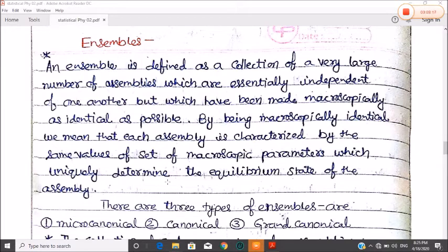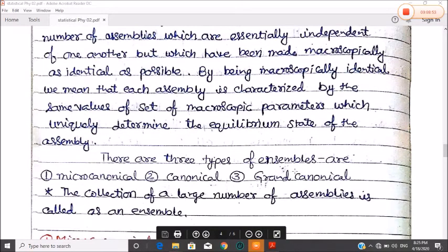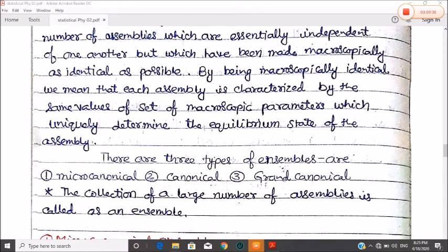An ensemble is defined as the collection of a very large number of assemblies which are essentially independent of one another, but which has been made macroscopically as identical as possible. By being microscopically identical, we mean that each assembly is characterized by the same value of set microscopic parameters which uniquely determine the equilibrium state of the assembly.